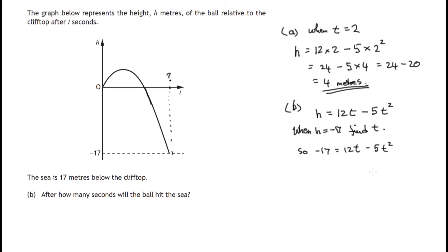Well, it is a quadratic equation. So we'll add 5t squared to both sides, so 5t squared will appear with this negative 17 on the left.